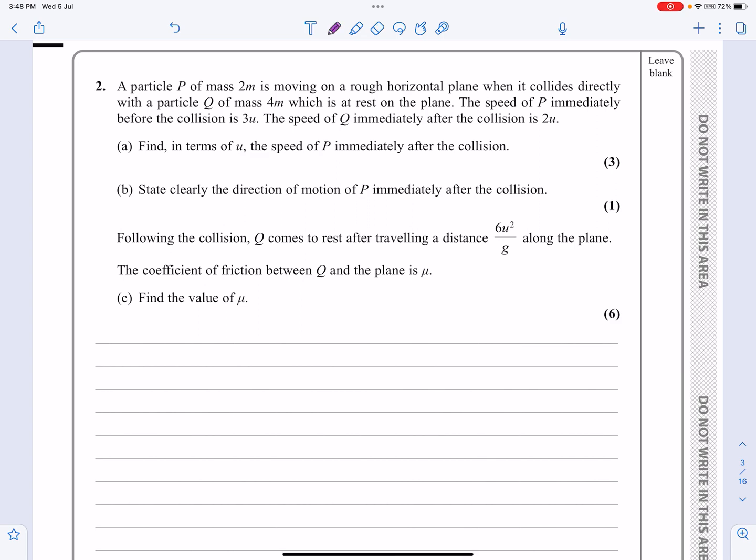Reading the first part, we've got a particle of mass 2m moving on a rough horizontal plane - that's all the stuff later on. And it collides, so this is going in one direction. And it's going to collide with a particle moving in the opposite direction.